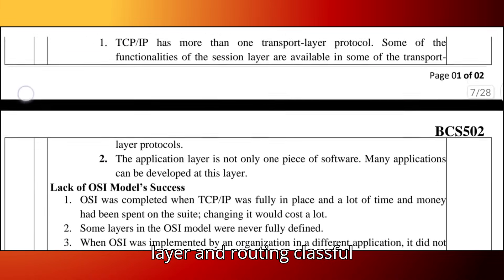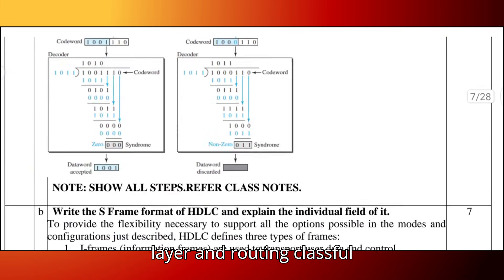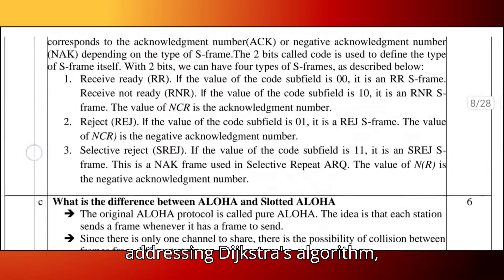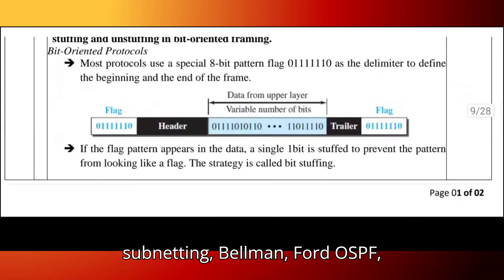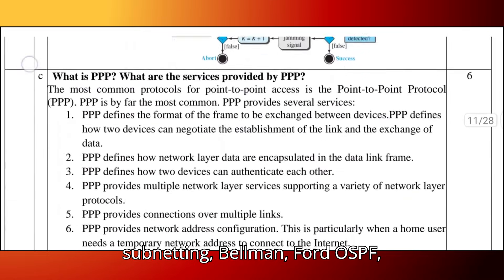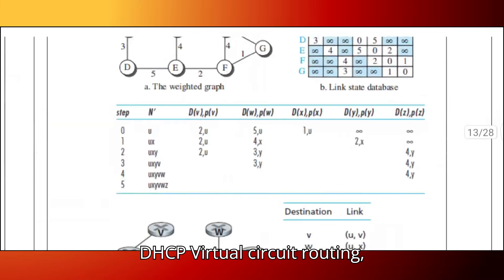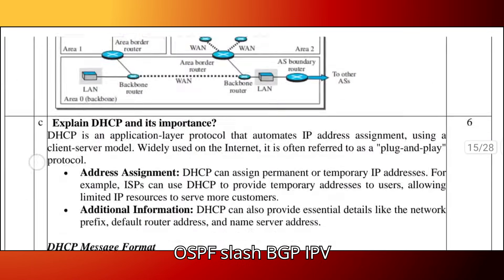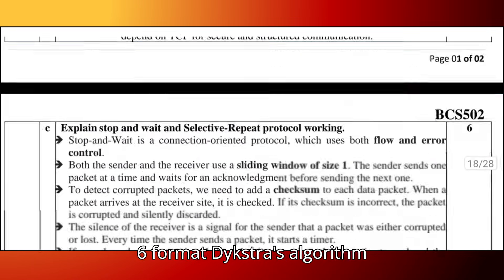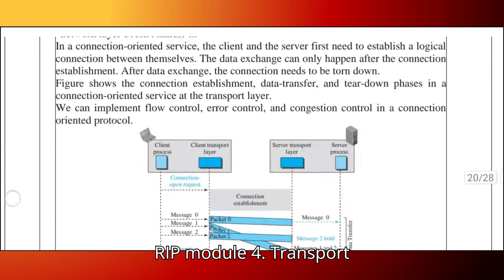Module 3 covers the network layer and routing, including classful addressing, Dijkstra's algorithm, subnetting, Bellman-Ford, OSPF, DHCP, virtual circuit routing, OSPF/BGP, IPv6 format, and RIP.